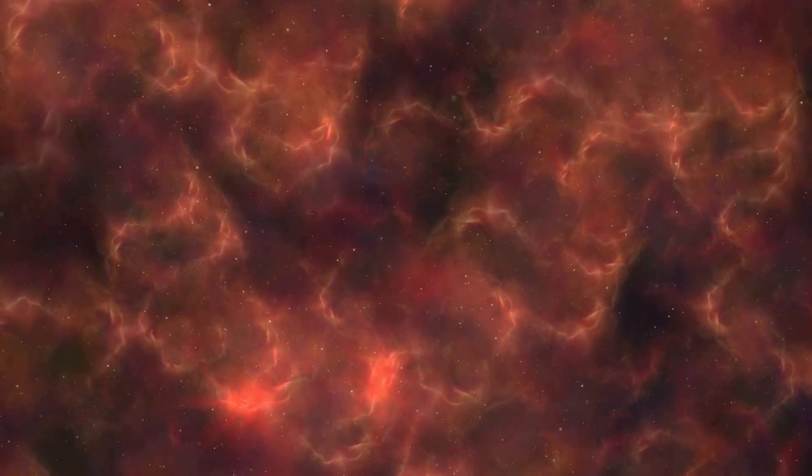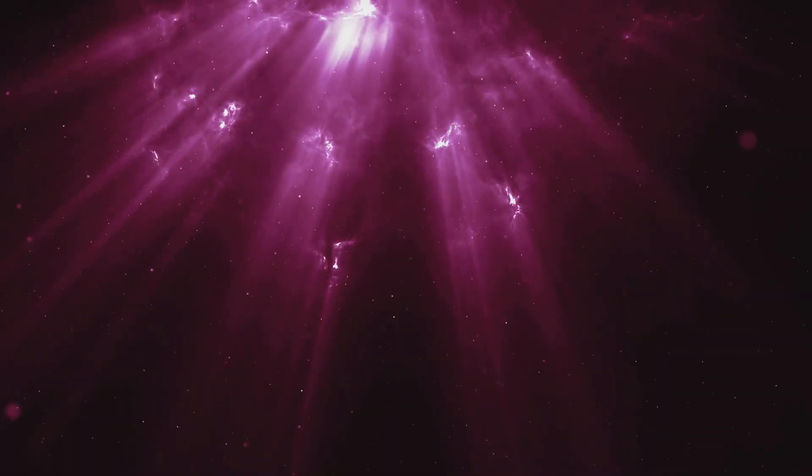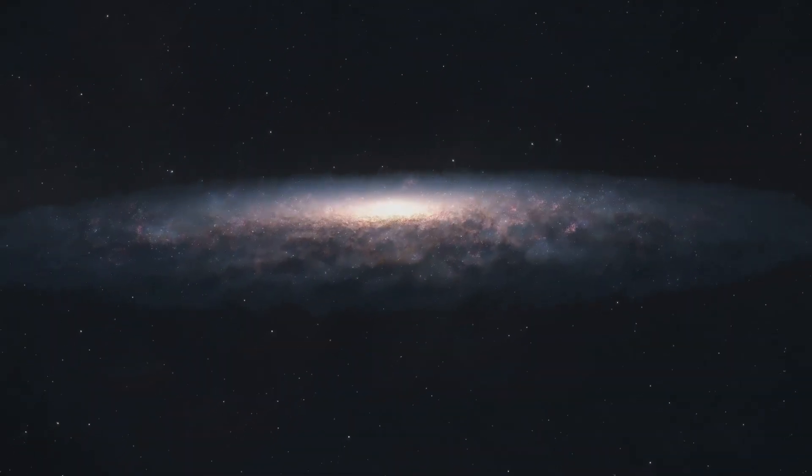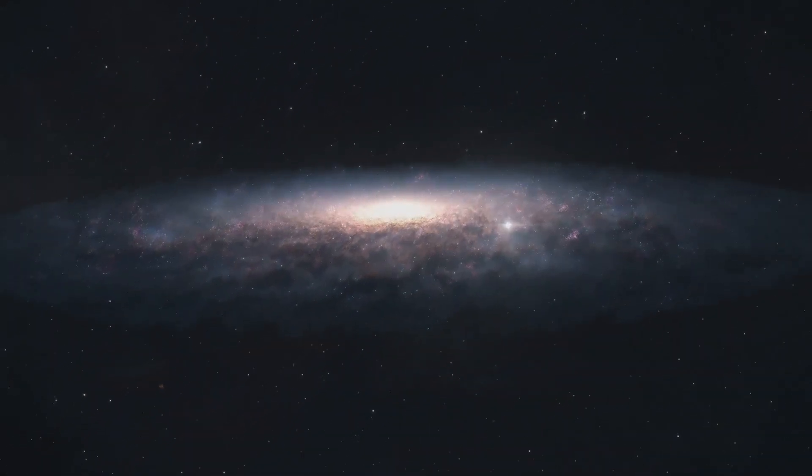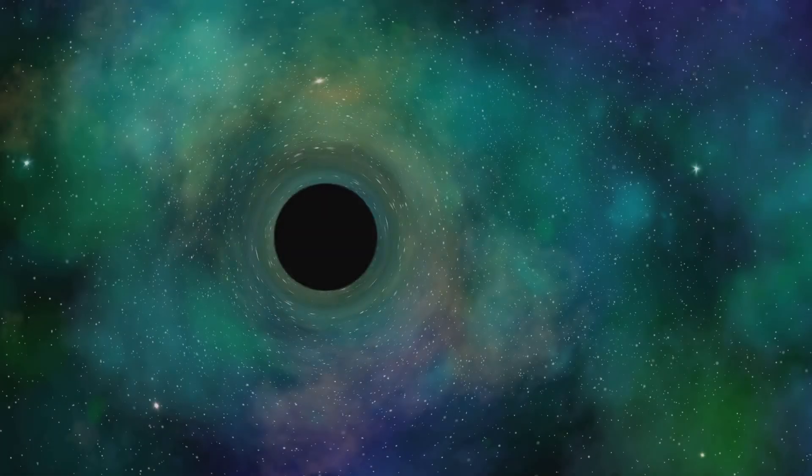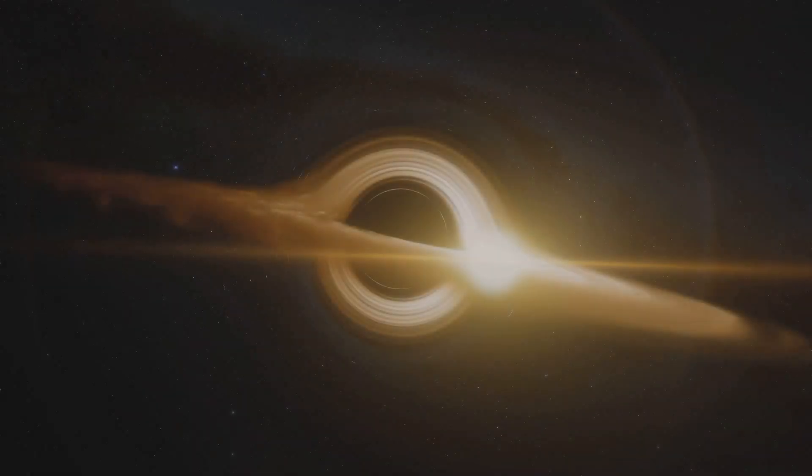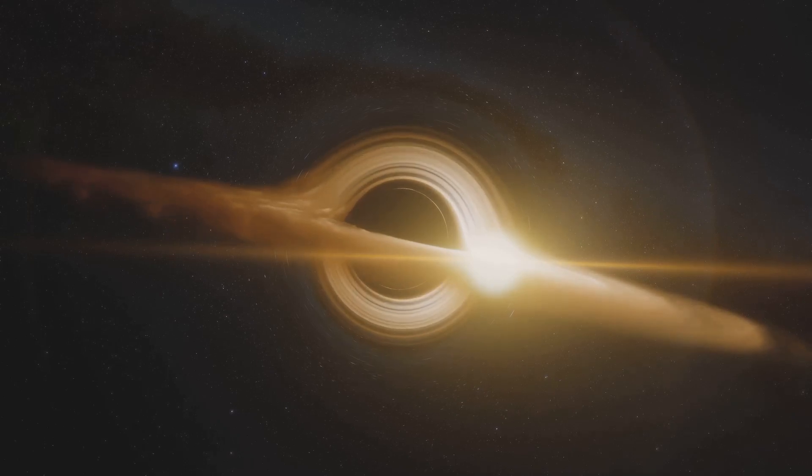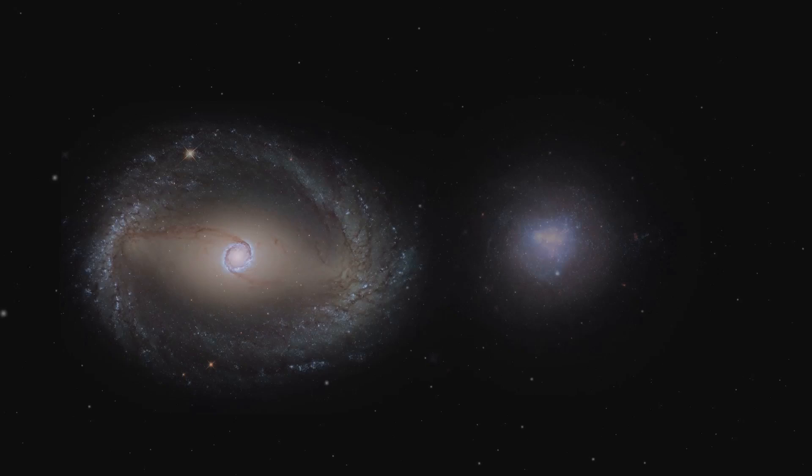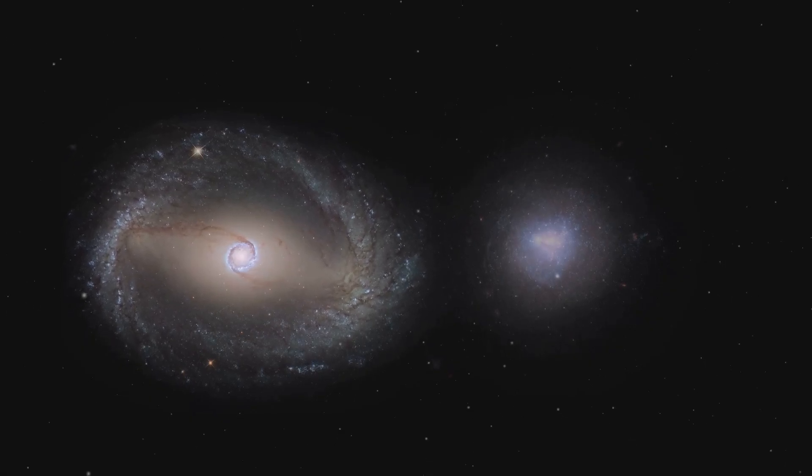Imagine a world where you could walk through walls, where light passed right through you, leaving you invisible to the human eye. That is the realm of dark matter, an elusive substance that pervades the universe yet remains hidden from our direct observation. It is a cosmic phantom, its presence inferred only through its gravitational effects on the visible matter we can see. Scientists estimate that dark matter accounts for approximately 85% of the total matter in the universe. Although we cannot see dark matter directly, we can infer its presence through its gravitational effects on visible matter.